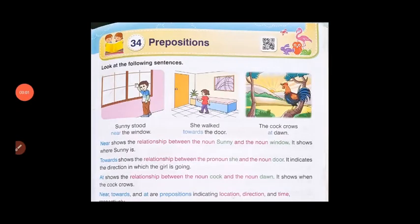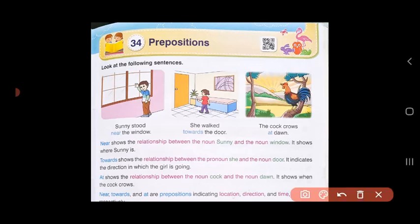The noun Sunny and the noun window - it shows us where Sunny is. In the second sentence, 'towards' shows the relationship between the pronoun she and the noun door. It indicates the direction in which the girl is going. And in the third sentence, the cock crows at dawn. 'At' shows the relationship between the noun cock and the noun dawn. It shows when the cock crows.